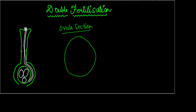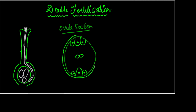In the ovule there is an internal structure where there are three cells on the top, three cells on the bottom, and two nuclei in the center. This internal structure of cells in the ovule is called the embryo sac.